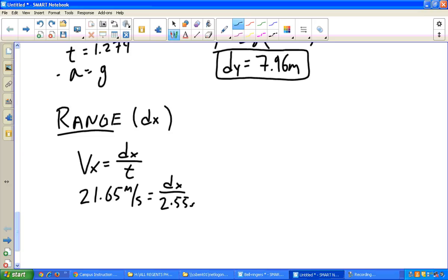Cross multiplying, solving, I get dx equals 55.2 meters. That's not a bad kick. That's just about half a soccer field. Not bad at all.